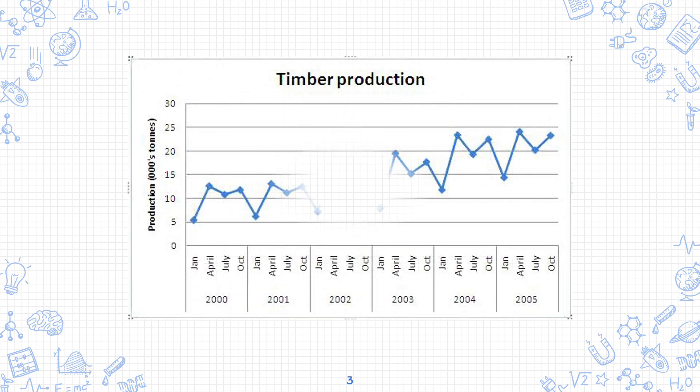Here we see timber production. On one axis we have given timber production, and on the other axis we have written the time period — quarterly. We have written quarters for every year.